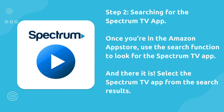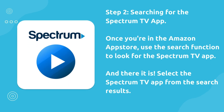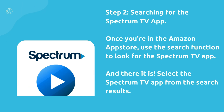Step 2: Searching for the Spectrum TV app. Once you're in the Amazon App Store, use the search function to look for the Spectrum TV app. And there it is — select the Spectrum TV app from the search results.